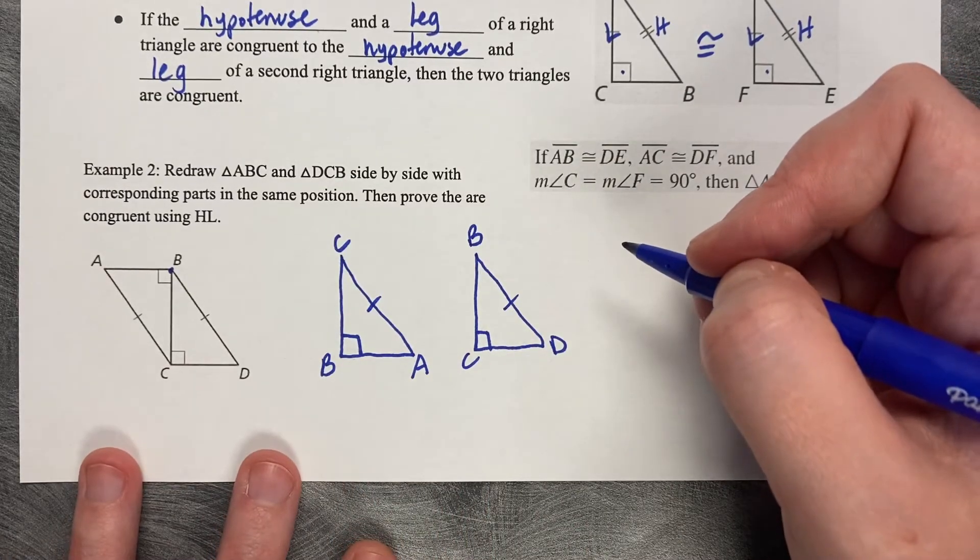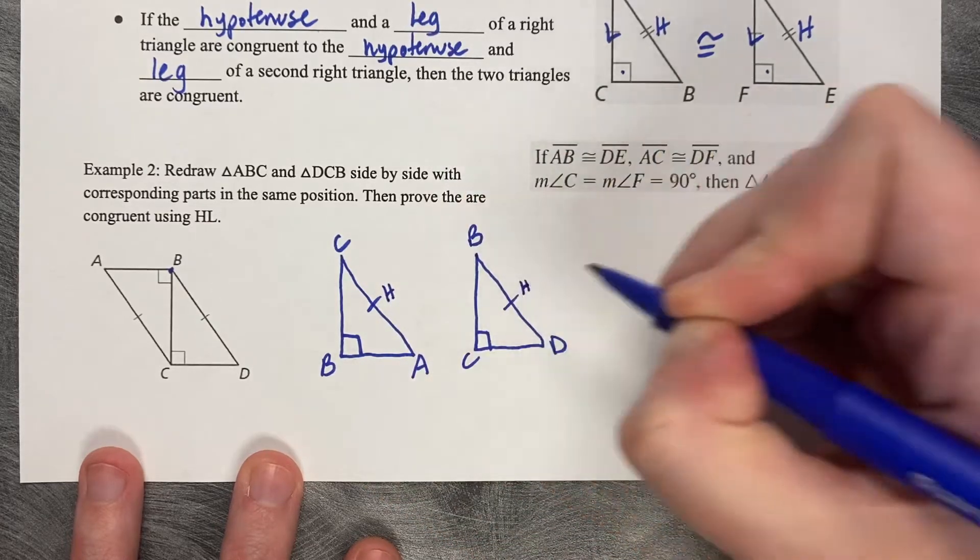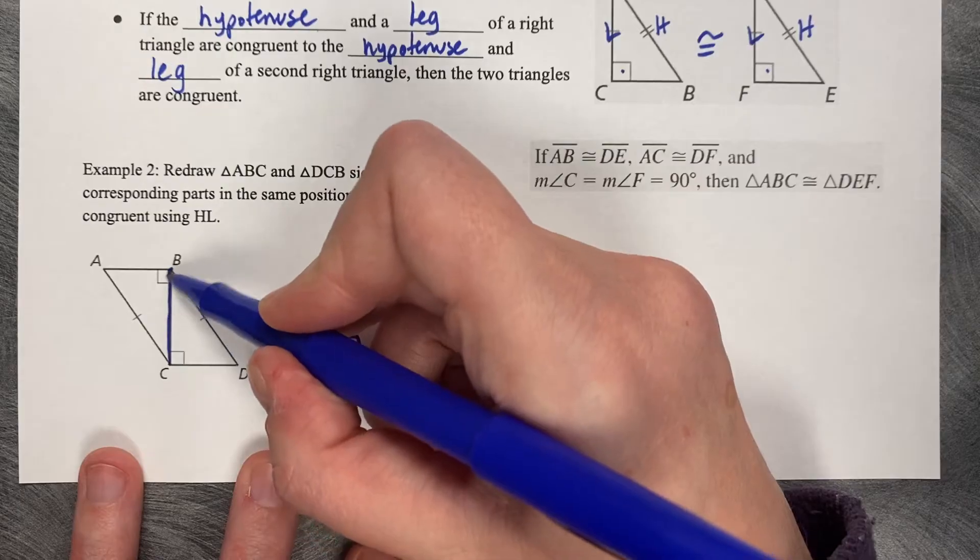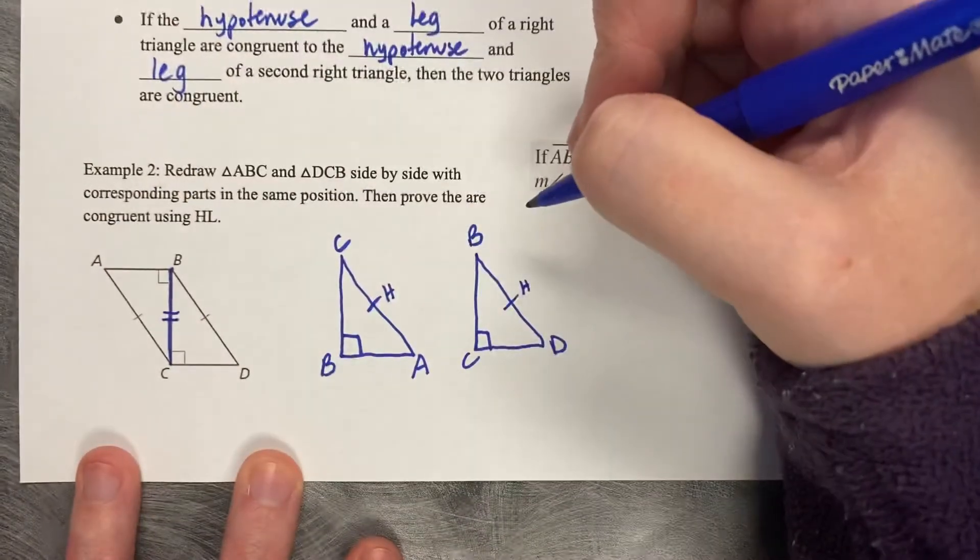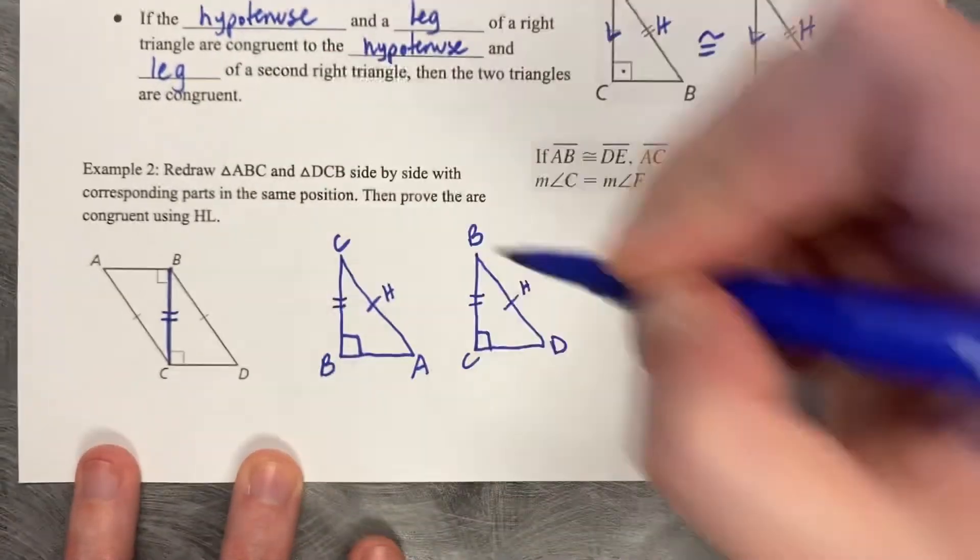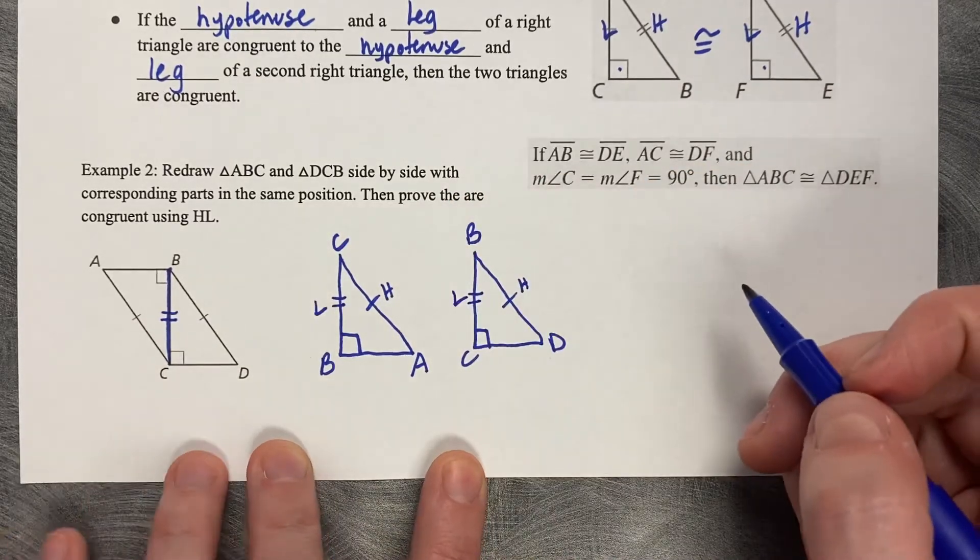Now we have to prove these are congruent by hypotenuse leg. Right now I've got a hypotenuse on each of them, but I need a leg. Recall that if there is a side length shared between the two of them, those are the same length. So BC is congruent to BC. That makes them congruent by hypotenuse leg.